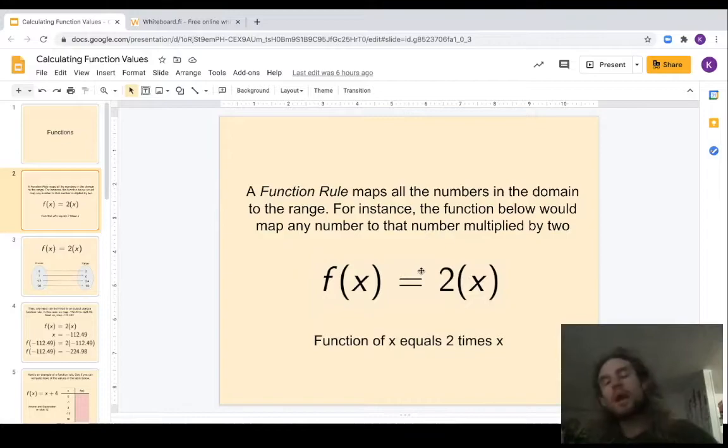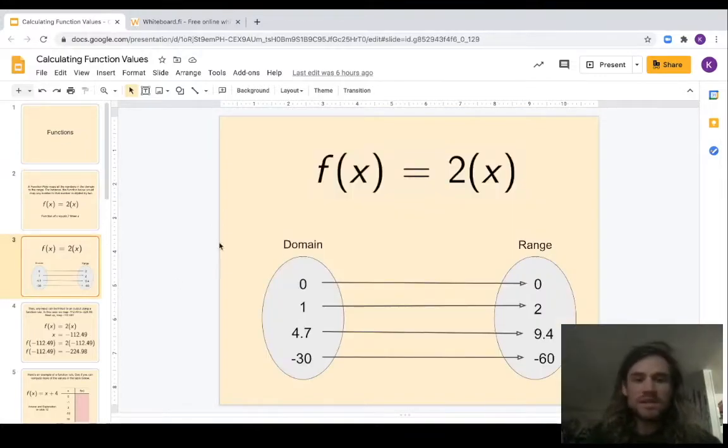Here we go, let's see it in action. Here's the domain value of zero - we'll multiply that times two, you also get zero. Here's a domain value of one - you multiply it times two, you get a value output range of two. 4.7 times 2 becomes 9.4.